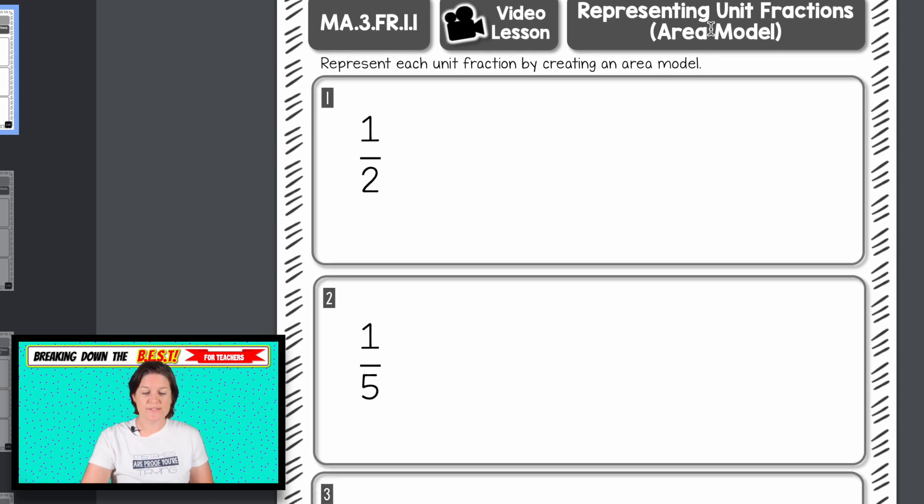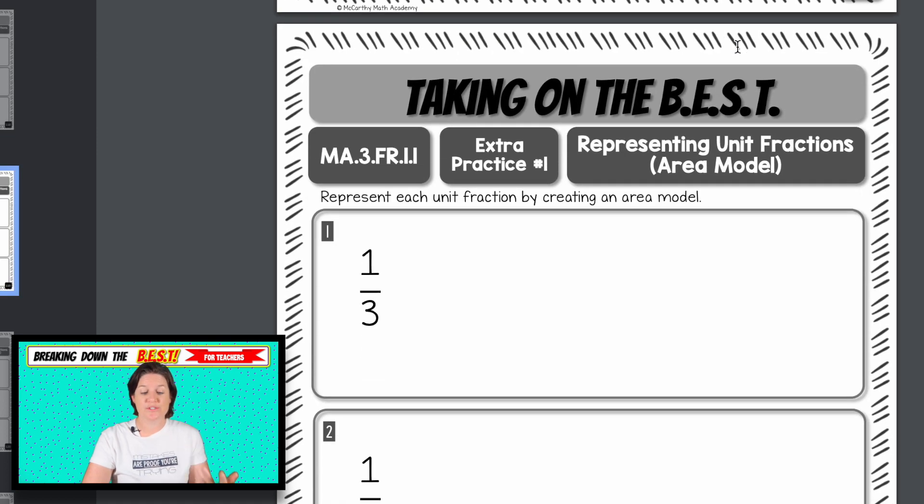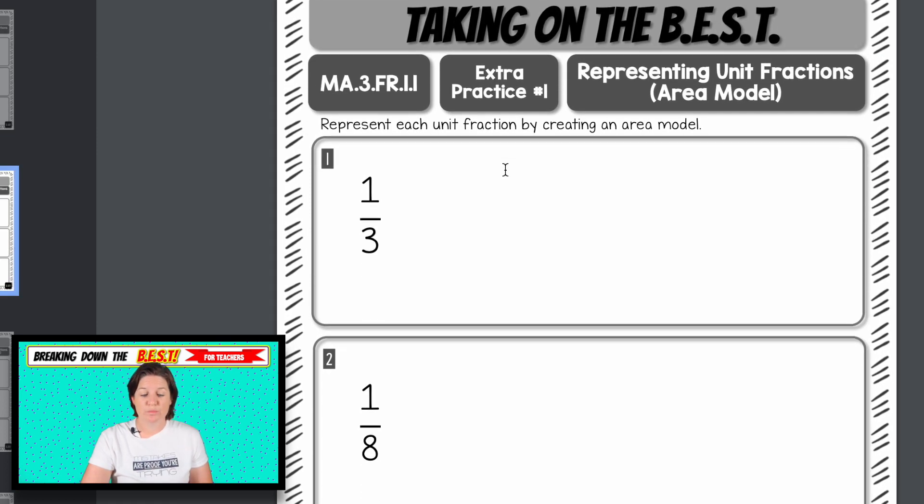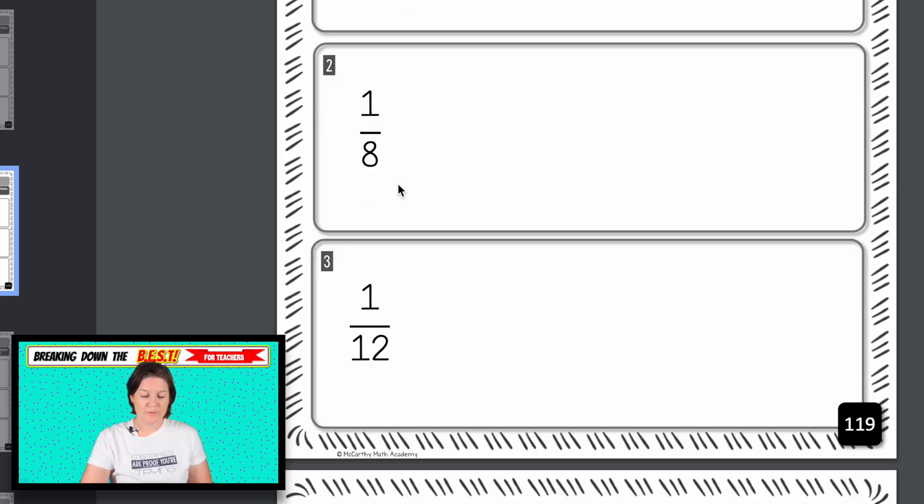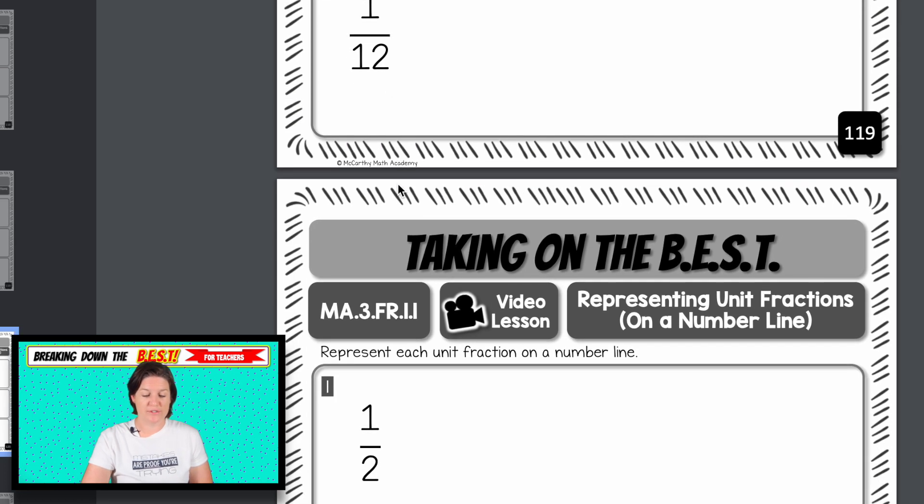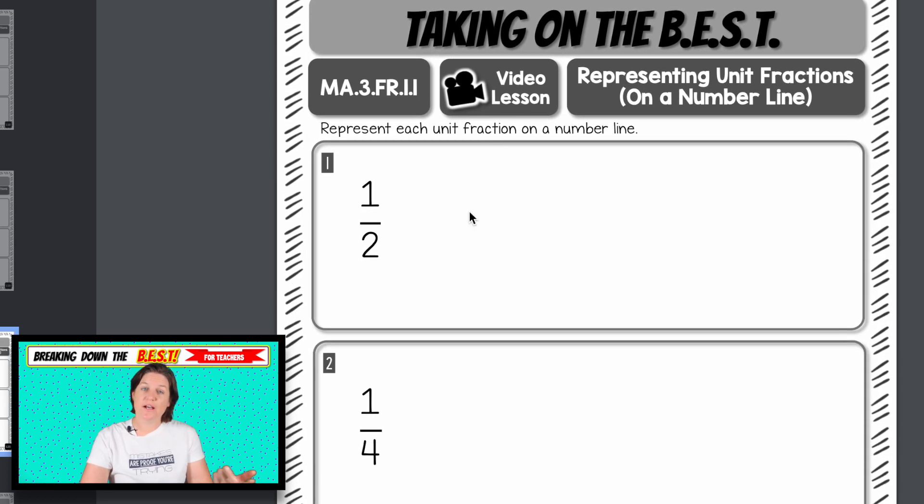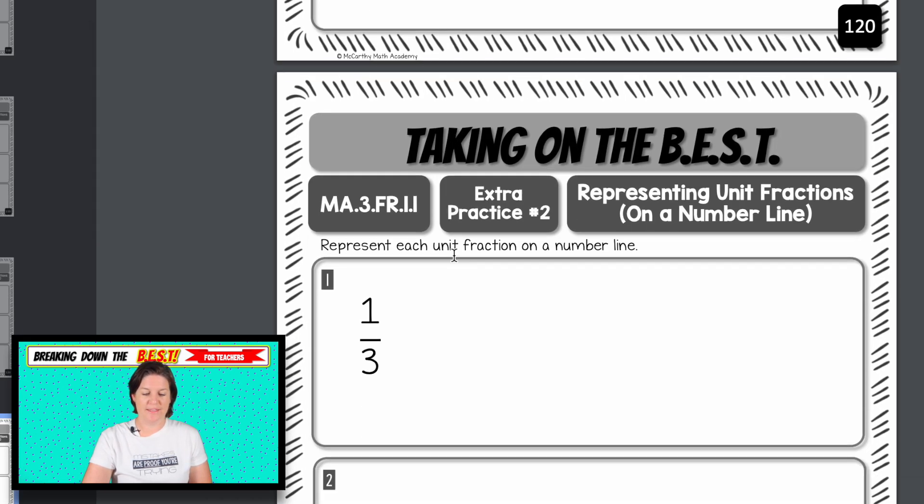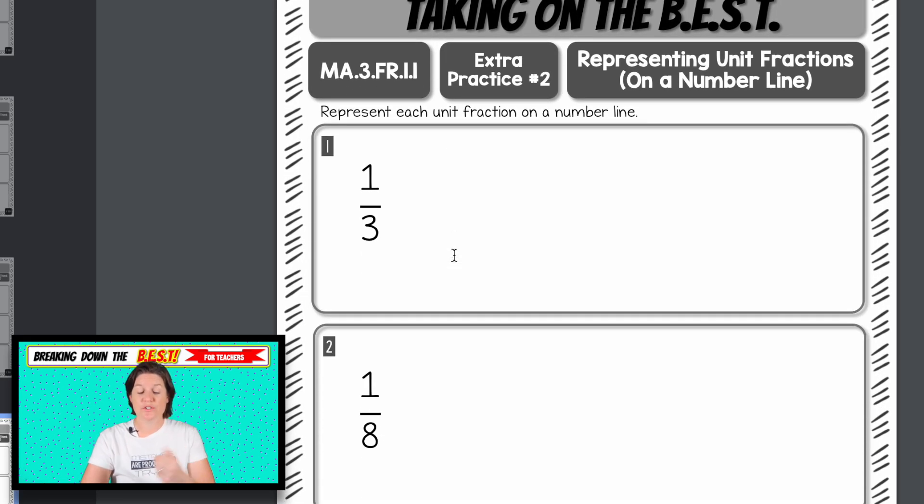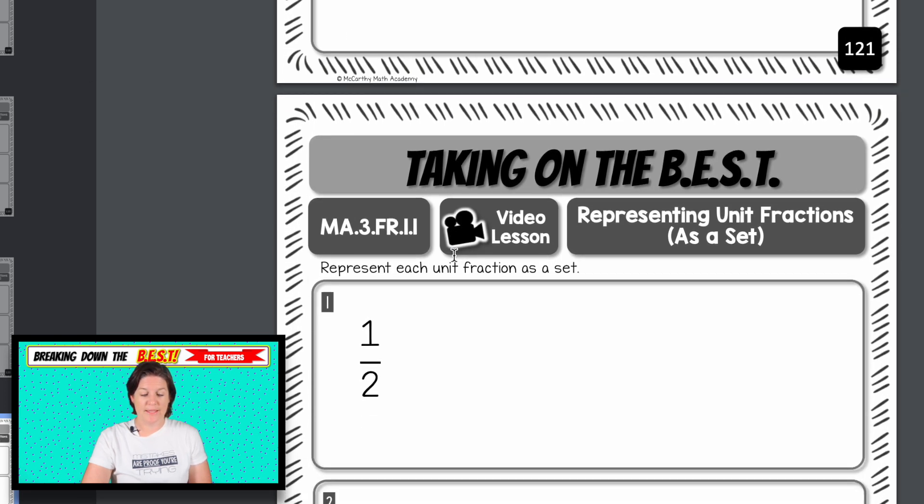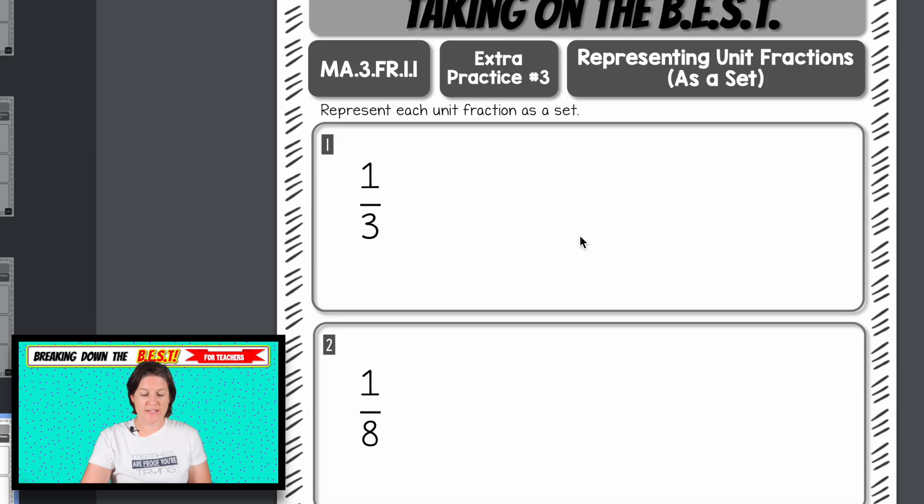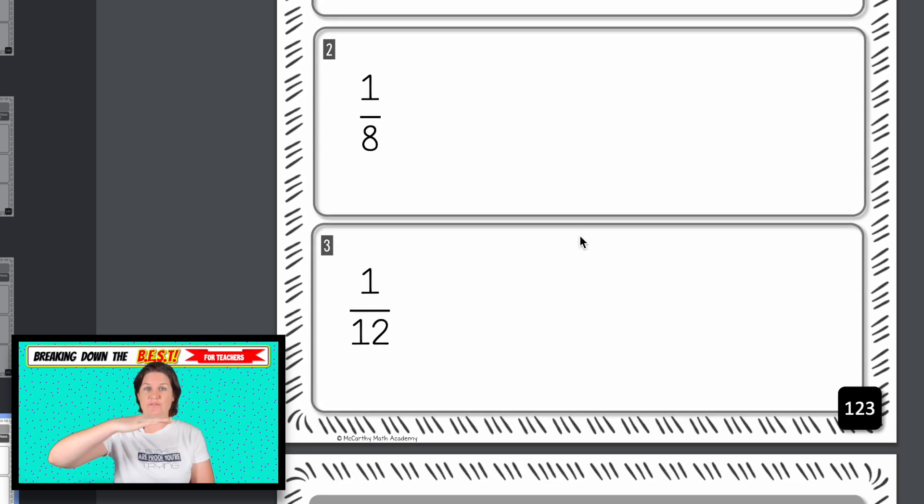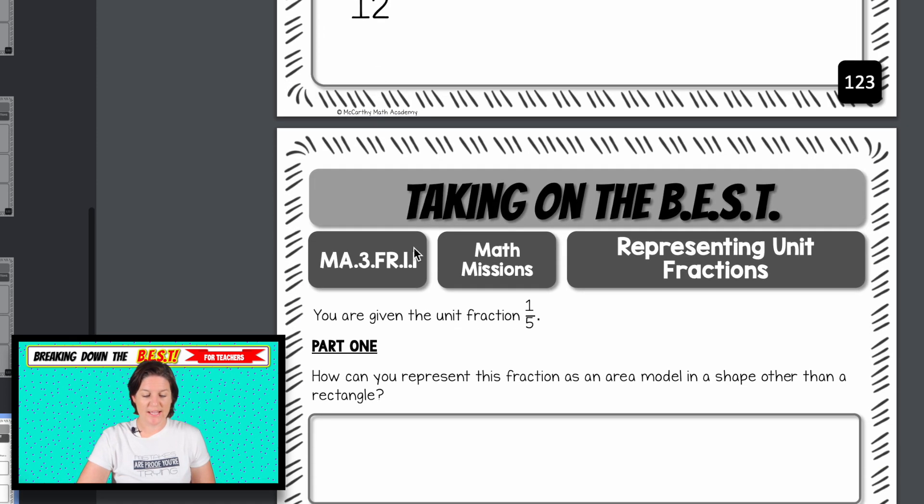So first we'll watch the video lesson on area models. And then we want to know that our students have it. So now they have their extra practice representing unit fractions using an area model. And there is an answer key for this as well. After that, we've got the other video lesson on a number line and then extra practice to see if your students have it. Then representing unit fractions as a set video lesson and then extra practice. It just follows the video lesson, extra practice, video lesson, extra practice format until you get to the end.